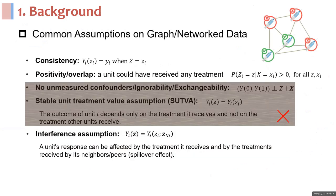However, the assumptions of no unmeasured confounders and SUTVA often fail in the graph domain. The interconnected nature of data introduces hidden confounders and interference. For example, a unit's response can be affected by the treatment it receives and by the treatment received by its neighbors. We often refer to these effects as the spillover effect.